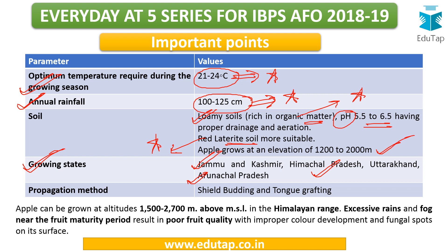Regarding propagation methods: apple uses asexual methods like budding and grafting. The type of budding used in apple is shield budding. The type of grafting involved — which was a question from lecture one — is tongue grafting, also known as whip and tongue grafting. Kindly keep this in mind.